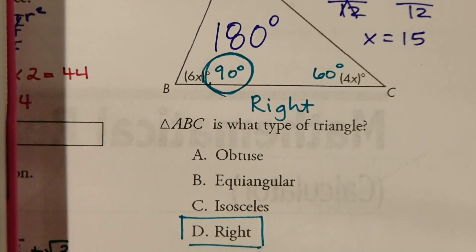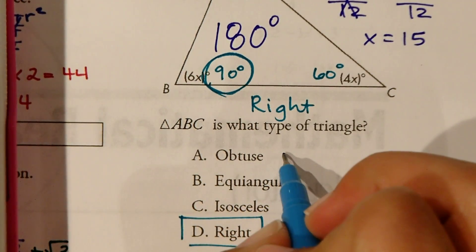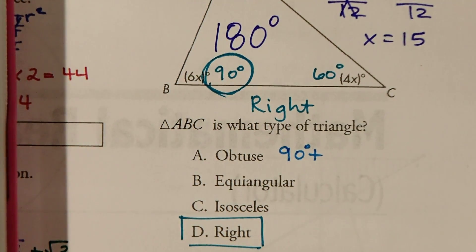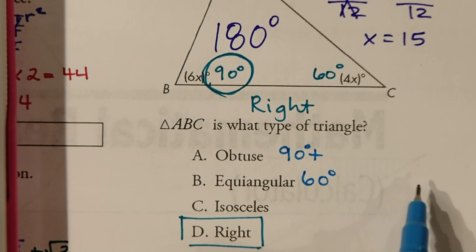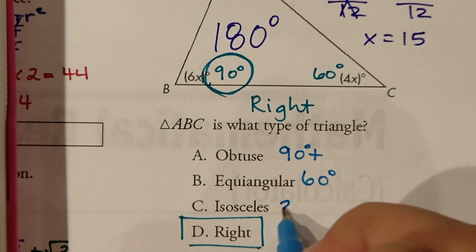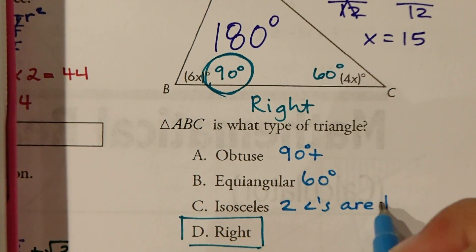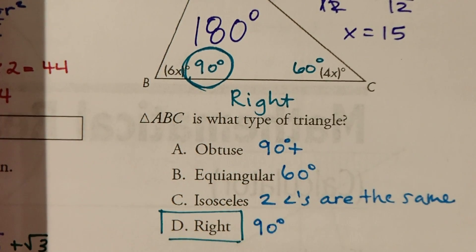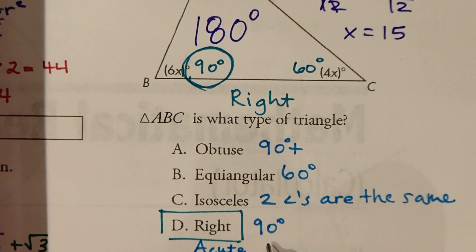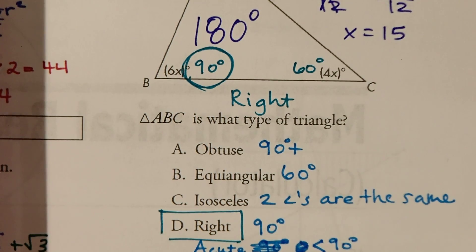Obtuse, just as a quick review, obtuse means that the largest angle is bigger than 90. So it's 90 plus degrees, over 90. Equiangular means each angle is 60 degrees. 60 plus 60 plus 60 equals 180. They all have to be the same to be equiangular. Isosceles means that two angles are the same. And then of course, a right triangle means that it has 90 degrees exactly inside it. The other option is acute, and that means that the largest angle inside the triangle is less than 90 degrees.